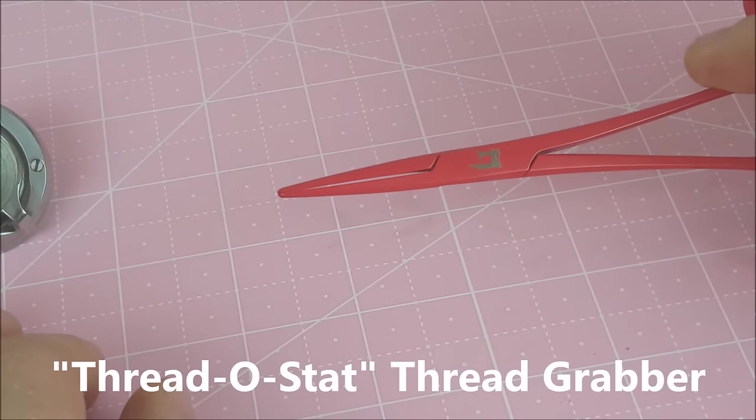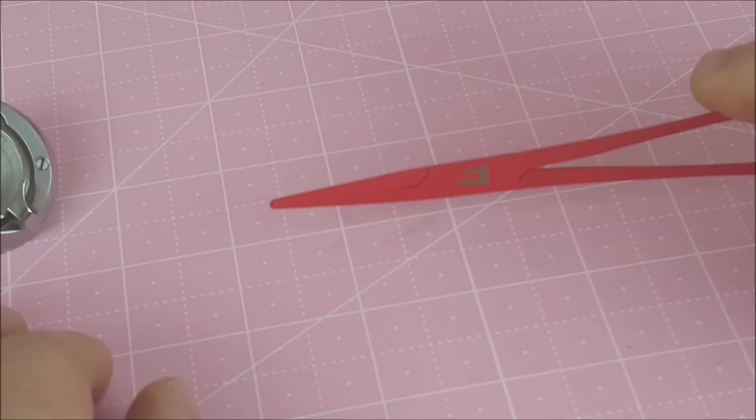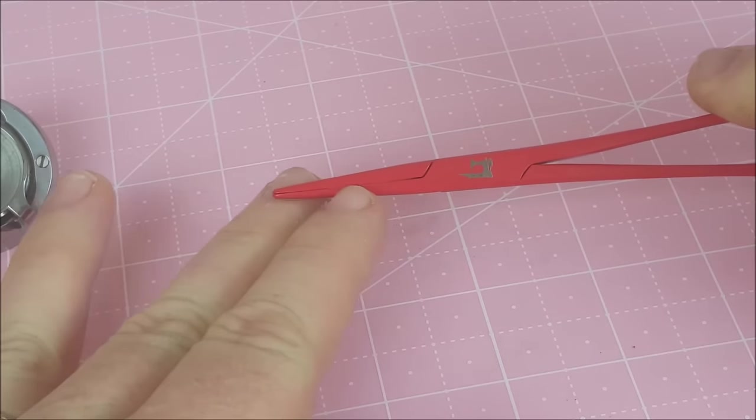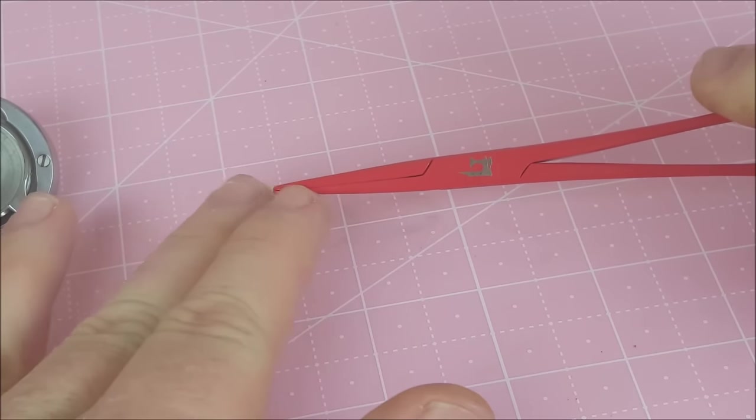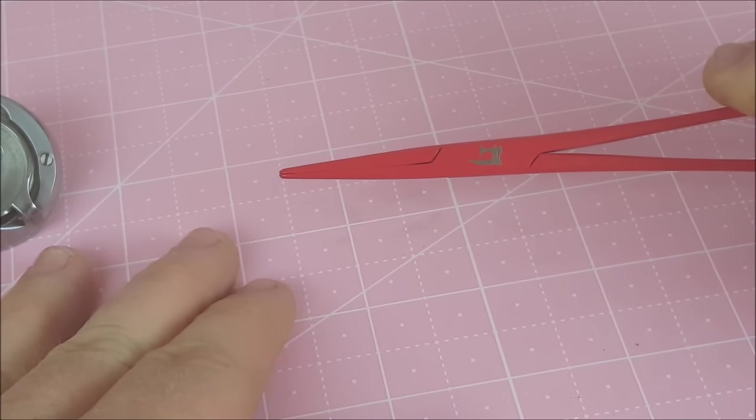But there's one other feature about these that I want to show you and that is they have a smooth jaw unlike most hemostats. We've called these our thread-o-stats, you can find them on our website under thread-o-stat. But they have this smooth jaw so as you pinch down on the thread you can see that there's no room for the thread to slip out of there. So they lock on the thread and they work great for getting thread out.